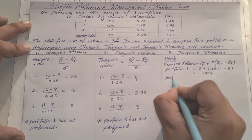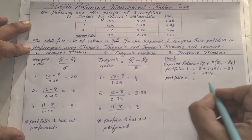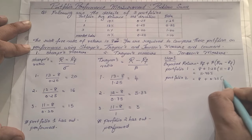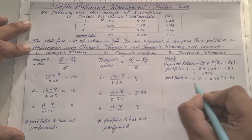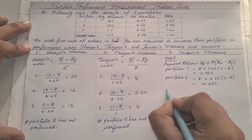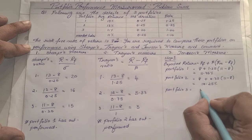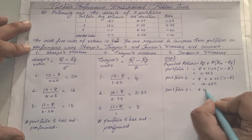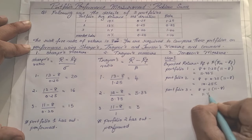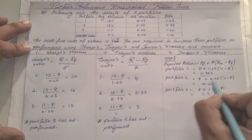For portfolio two, using the same CAPM formula with risk-free return of 8% and beta of 0.75, the expected return comes to 10.25%. For portfolio three, with beta of 1 and the same market and risk-free figures, the expected return is 11%. That completes step one — finding the expected return for all three portfolios.